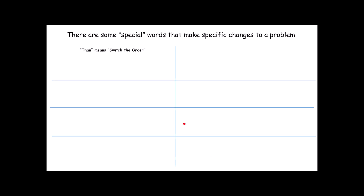There are some special words that make specific changes to a problem. These are the words that tend to make problems more challenging — like the word than. Most people, even those who feel pretty good at problem-solving, don't realize that the word than has a very specific job: it means switch the order in the operation. For example, '3 less 10' and '3 less than 10' mean very different things. '3 less 10' tells me take 3 and remove 10 from it — that gives negative 7. But '3 less than 10' means start with the 10 and remove 3 from that, giving positive 7. So if I said to you '7 less than' some quantity, what I'm doing is taking that quantity and subtracting 7.